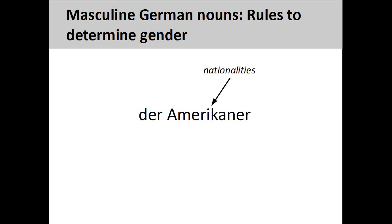Nationalities are also masculine. 'Amerikaner,' meaning 'American,' is a masculine noun. We'll see a way to form a feminine version of these nouns later.